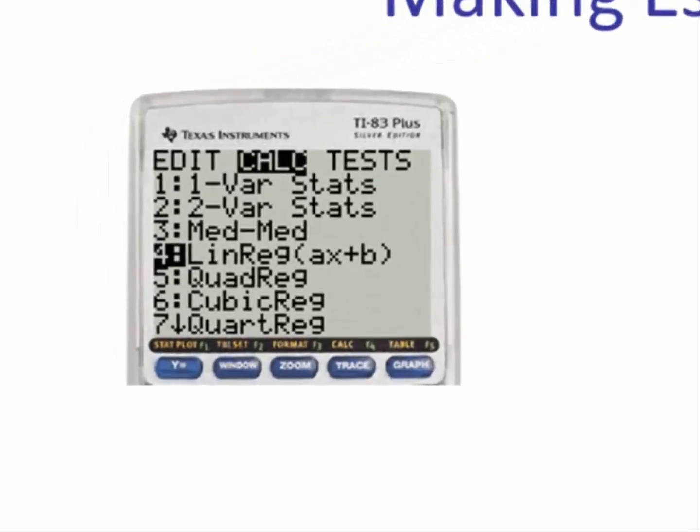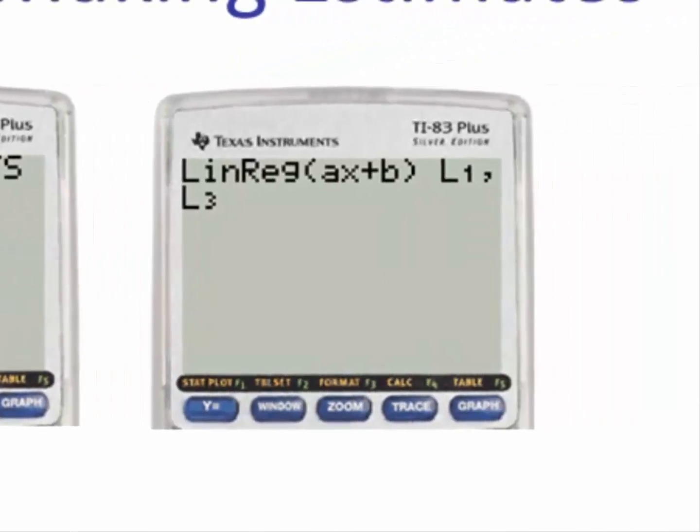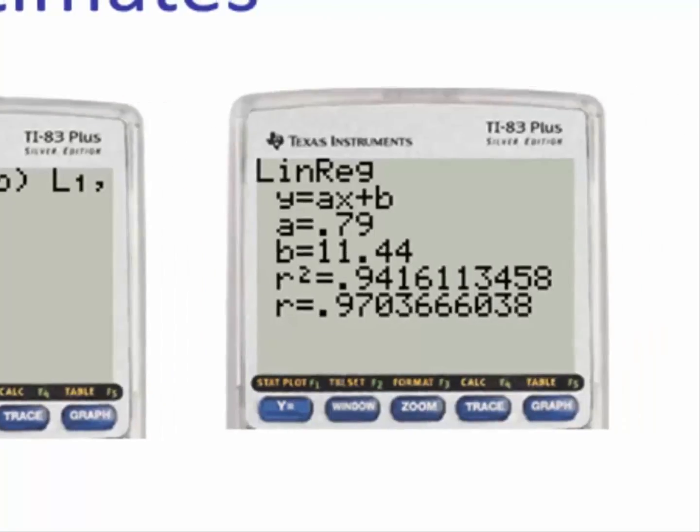For g, we go to our linear regression command. This time from the home screen we want list 1 comma list 3, because g is in list 3. This is the linear regression model. R squared is 0.94.